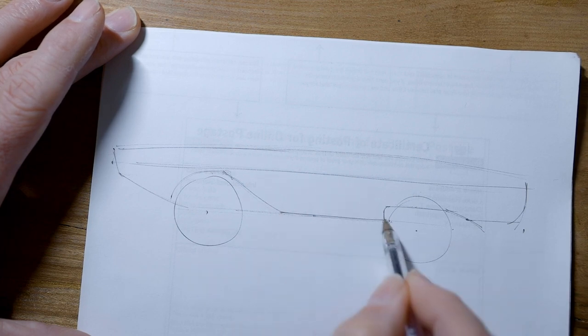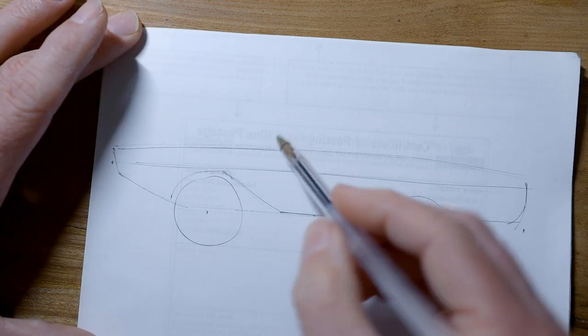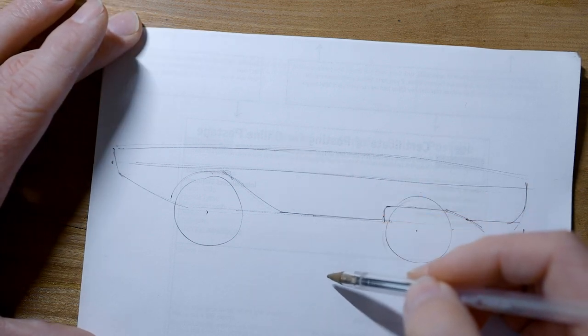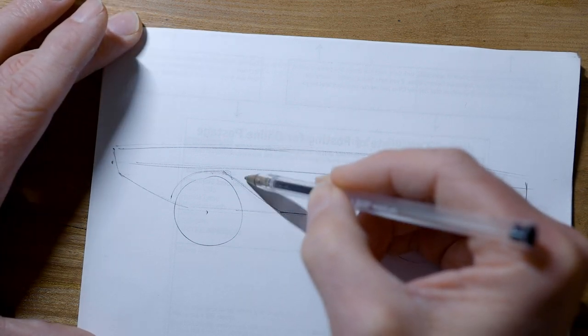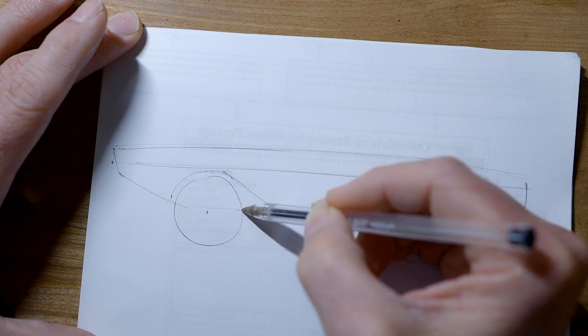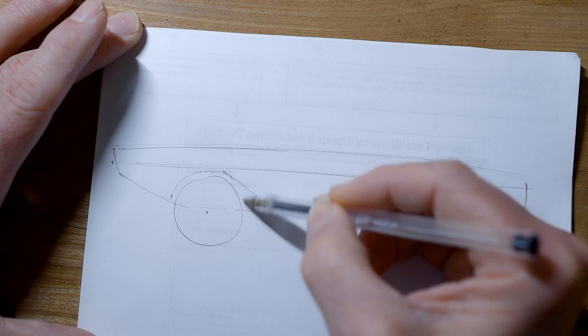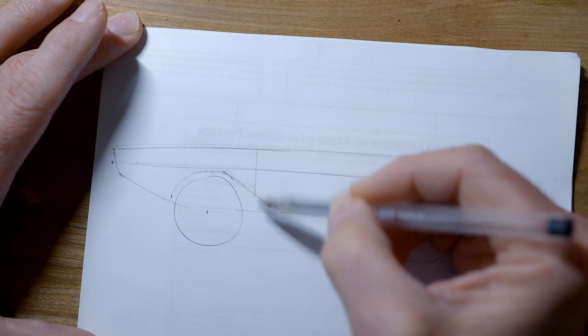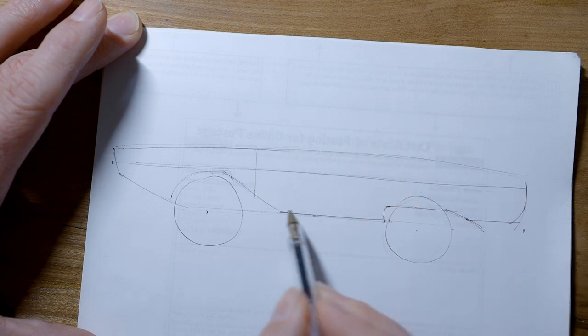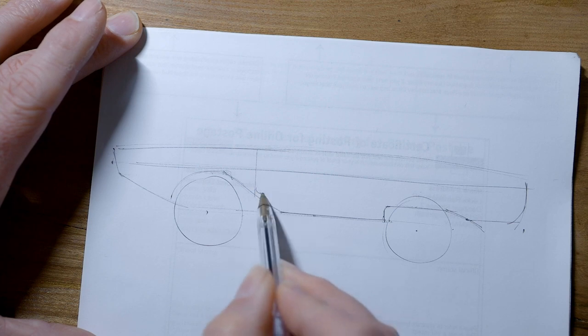So there's the basic form of the bodywork. Now we've got a few things to add. So we've got a door. So the front edge of the door is a little bit back from the edge of this wheel. So we've just got a vertical there. Obviously it can't go into the wheel arch, so it has a little curve and then goes across horizontally.